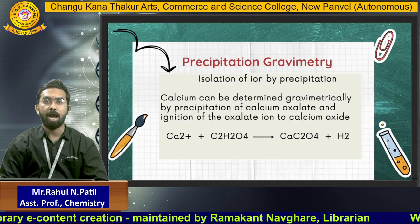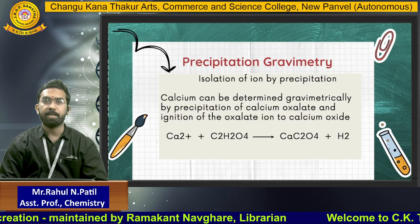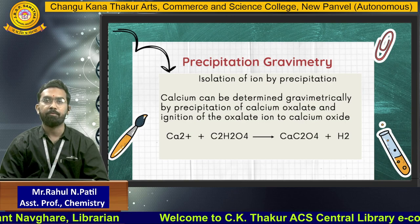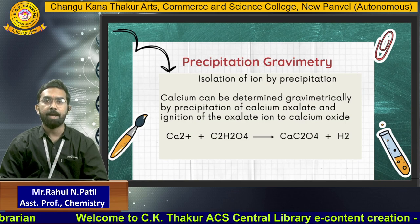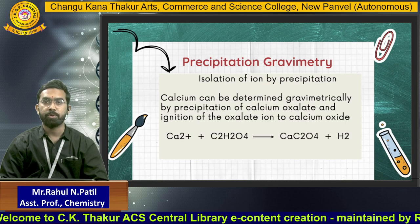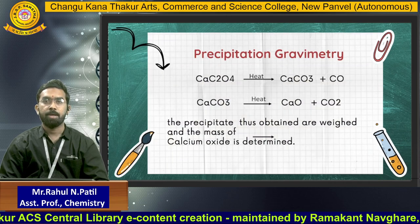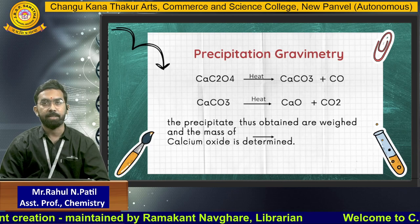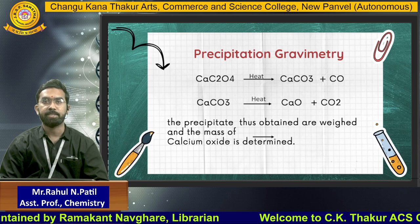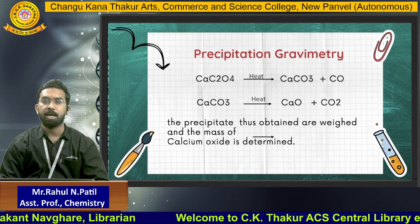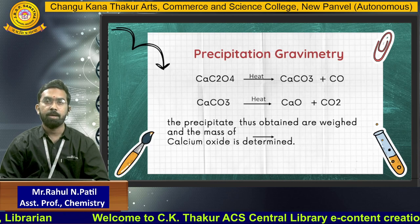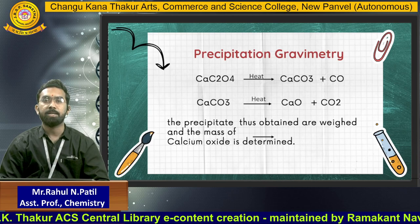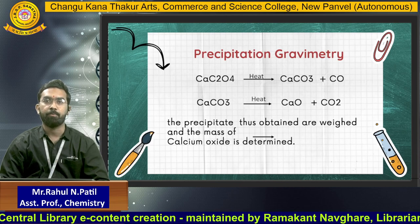Another example — precipitation gravimetry for isolation of an ion: calcium can be determined gravimetrically by precipitation of calcium oxalate and ignition of the oxalate ion to calcium oxide. When calcium ions react with oxalic acid (C2H2O4), calcium oxalate (CaC2O4) is formed. On continuous heating, it converts to calcium carbonate (CaCO3) and CaO as a byproduct. Further heating of CaCO3 yields calcium oxide (CaO) and carbon dioxide (CO2) as a byproduct. The precipitate is weighed and the mass of calcium oxide is determined.